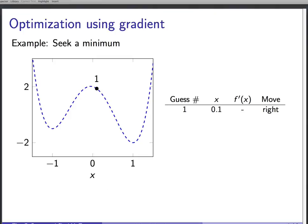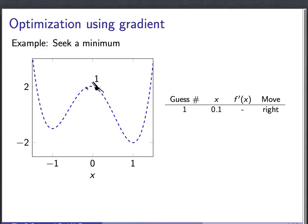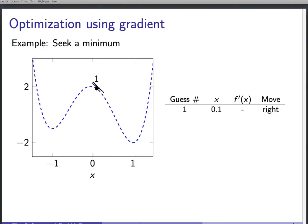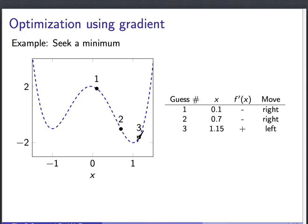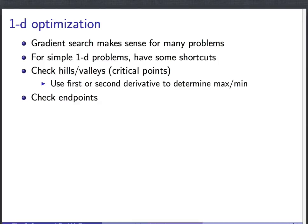The same idea works if you're seeking a minimum — you just walk in the direction the function is decreasing. Starting at point one, the derivative is negative, so we move to the right. The derivative is still negative, so we move right again. Then the derivative turns out to be positive, so we've moved too far — we walk back left a little. We stop when the derivative is zero and the function is not decreasing in either direction, finding a local minimum.